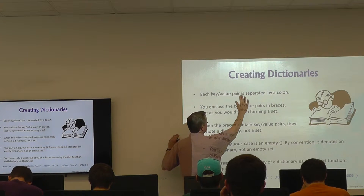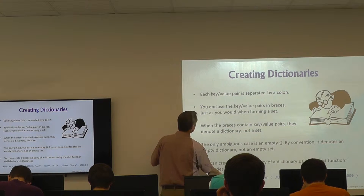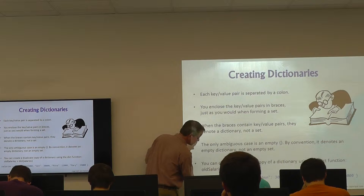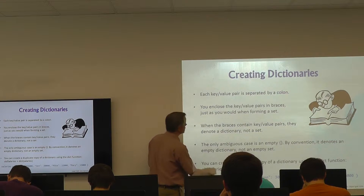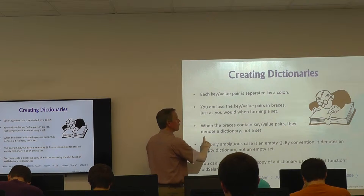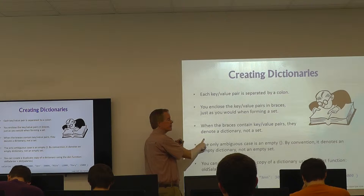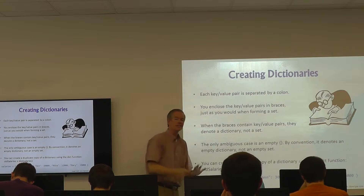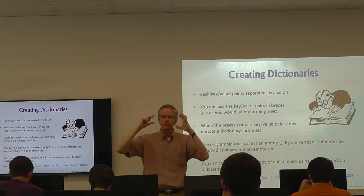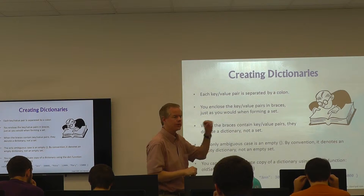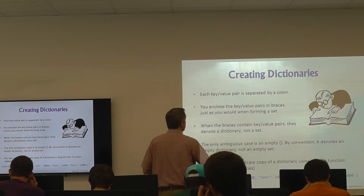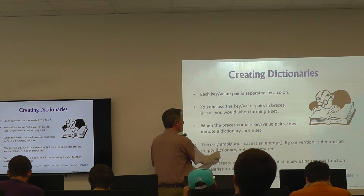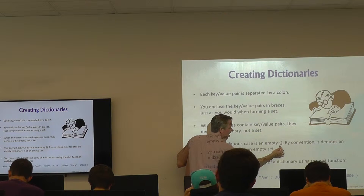How do you actually create a dictionary? Each key-value pair is separated by a colon. You enclose the key-value pairs in braces — these little squiggly brackets. If the braces contained only values, you would have been forming a set. When the braces contain key-value pairs, they denote a dictionary, not a set. The only ambiguous case is an empty set — by convention, empty braces denote an empty dictionary, not an empty set.